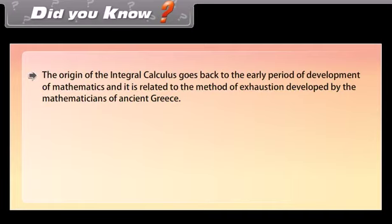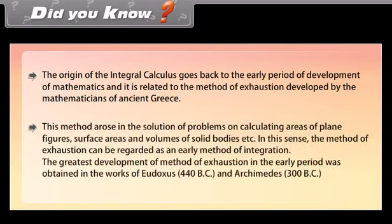Did you know? The origin of integral calculus goes back to the early period of development of mathematics and is related to the method of exhaustion developed by mathematicians of ancient Greece. This method arose in the solution of problems on calculating areas of plane figures, surface areas, and volumes of solid bodies. In this sense, the method of exhaustion can be regarded as an early method of integration. The greatest development was obtained in the works of Eudoxus (440 BC) and Archimedes (300 BC).